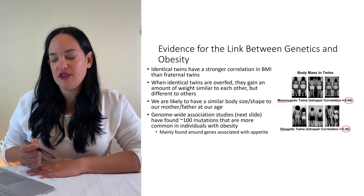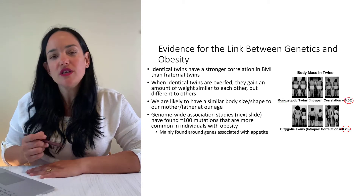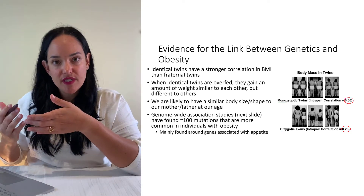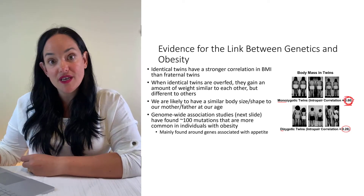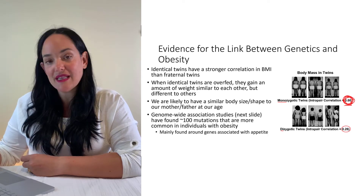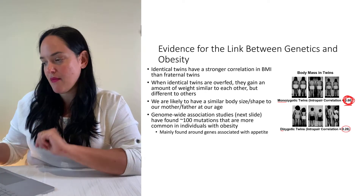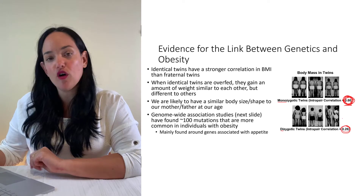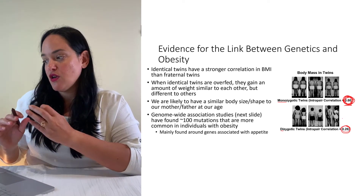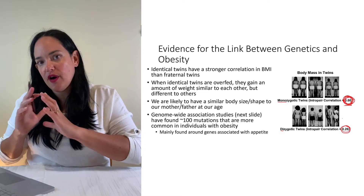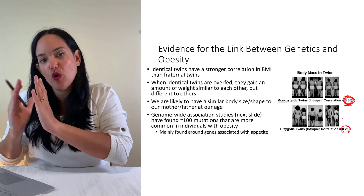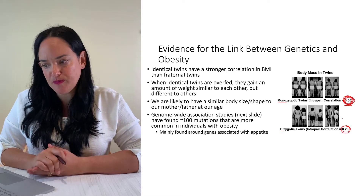There's so much evidence to support this. Some of the earliest evidence is just looking at twins. Identical twins have the same genes, and we find that identical twins are way more likely to have a similar BMI compared to fraternal twins — ones with different DNA. There's something going on in genetics that increases the likelihood that a BMI or weight will be at a certain level.